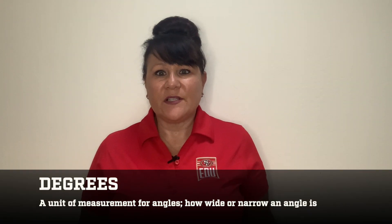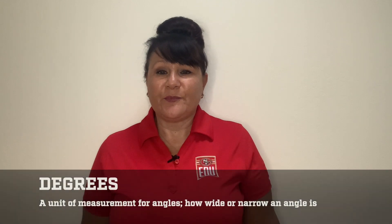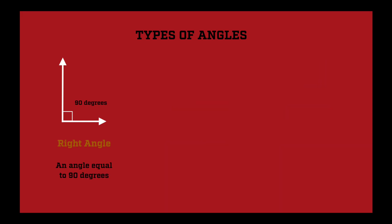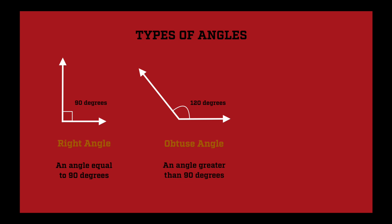Let's review some now, but before we do that, I want to mention that we use different units of measurements for angles. They're called degrees. Degrees tell us how wide or narrow an angle is. There are a few angles that I'd like to describe. The first one is a right angle. A right angle always has a 90 degree angle in the corner. The next angle is an obtuse angle. That has an angle that is greater than 90 degrees. And yet another angle is an acute angle. This is an angle that is less than 90 degrees.